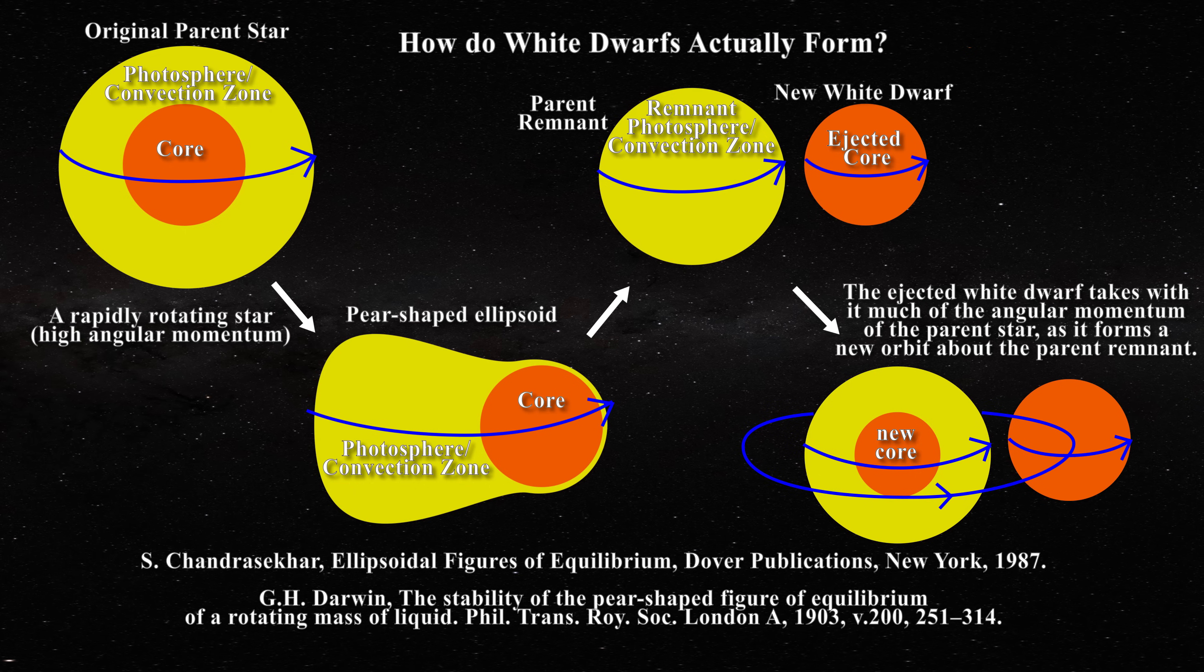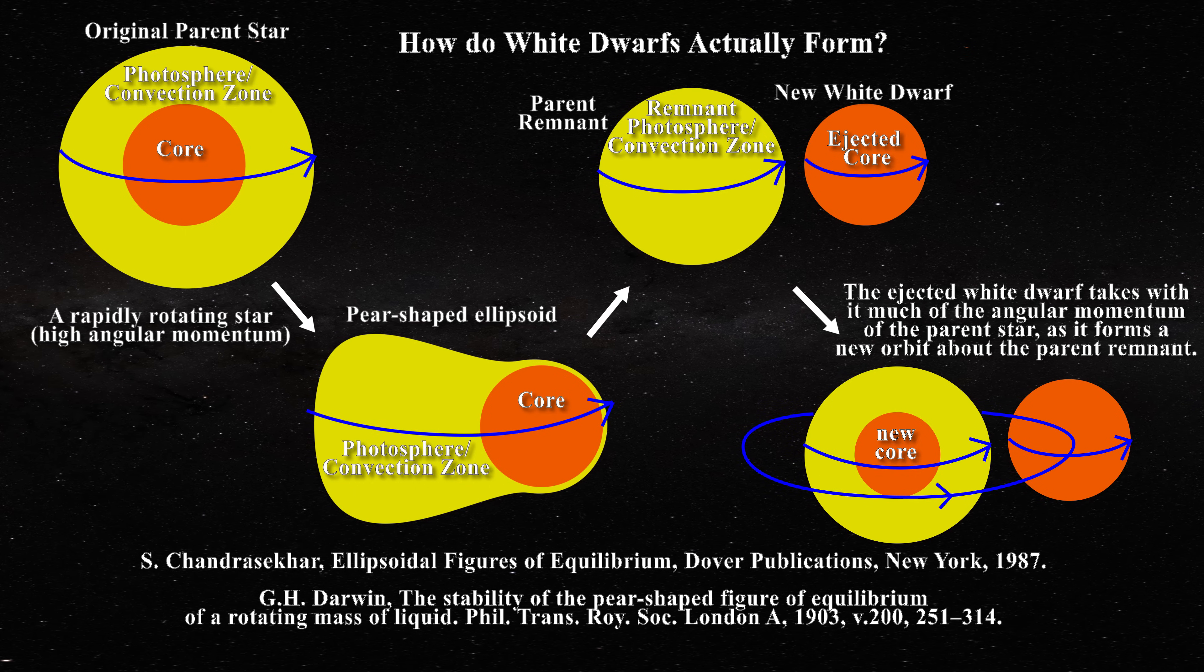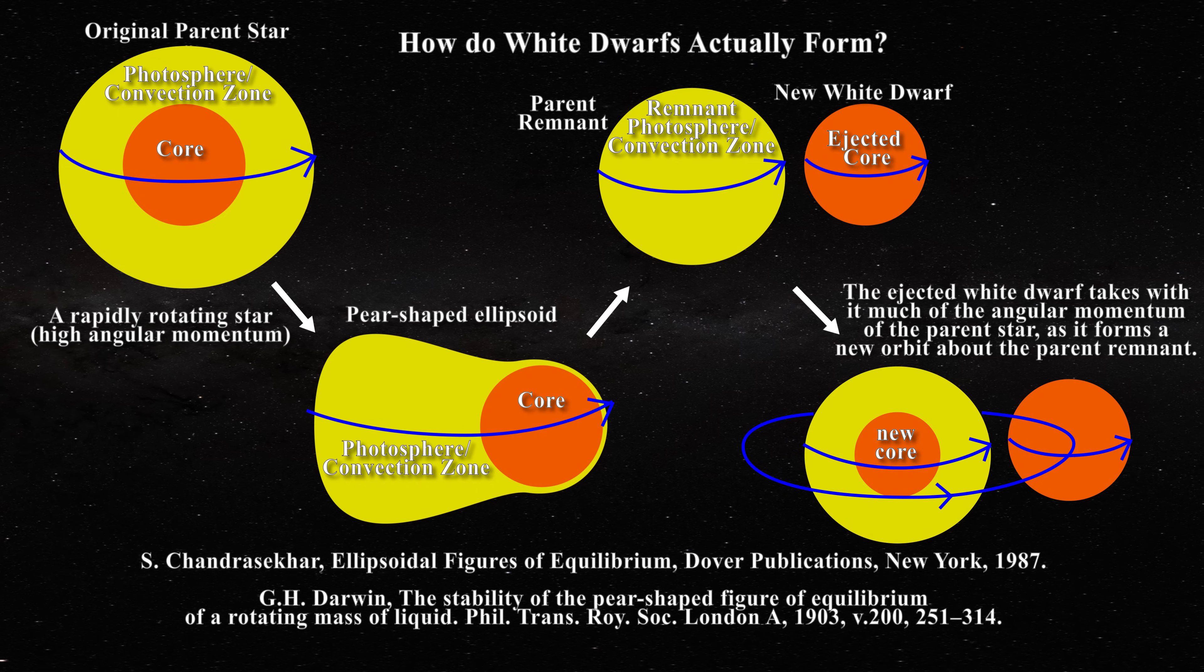Of course, nothing actually precludes the body-centered cubic as having lower emissivity than the hexagonal planar lattice. This concludes our analysis of white dwarf stars.